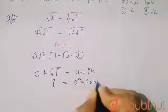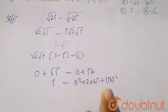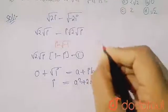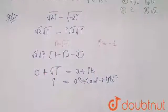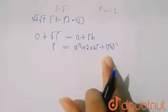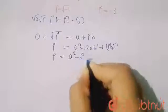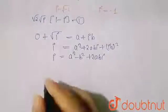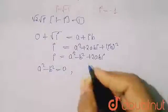Expanding the right side: (ib)² = i²b² = −b², since i² = −1. So i = (a² − b²) + 2ab·i. Now compare real and imaginary parts: real part gives a² − b² = 0.